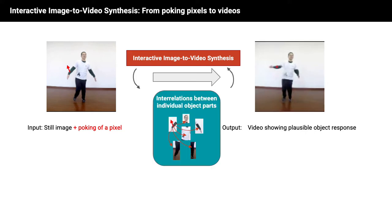A model trained to achieve this novel task has to infer the object motion of the remaining parts, which aren't directly manipulated, thus it needs to capture the interrelations between all individual object parts. Having learned such a model enables human users to interact with still images, only by poking a certain pixel.